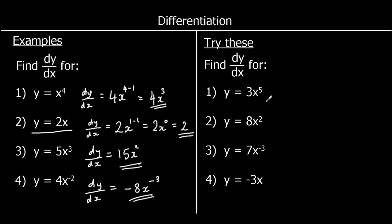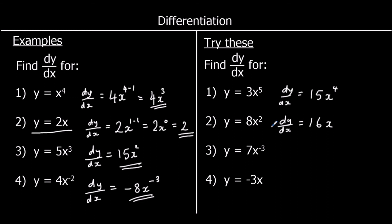Some questions for you to try — pause the video and give these a go. Question 1: y equals 3x to the power of 5. Times by the power: 5 times 3 is 15, take one off the power — 5 take away 1 is 4 — so dy/dx is 15x to the power of 4. For 8x squared: times by the power — 2 times 8 is 16 — take one off the power, x to the power of 1, written as x, so 16x. For 7x to the power of negative 3: negative 3 times 7 is negative 21, take one off the power — negative 3 take away 1 is negative 4 — so negative 21x to the power of negative 4. The last one is a straight line with a gradient of negative 3, so dy/dx is negative 3.